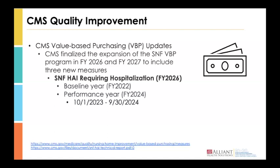CMS has updated their value-based purchasing measures to specifically include a skilled nursing facility HAI, or healthcare-associated infection requiring hospitalization measure, which will be applicable to FY2026. Data for this measure was collected in FY2022, and we are currently in the performance period that started October 2023 and continues through the end of September of this year. It is clinically important and also on the radar in terms of value-based purchasing and quality improvement initiatives.